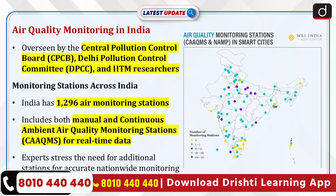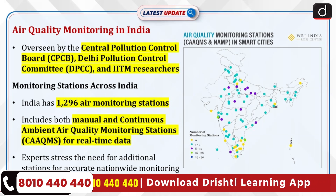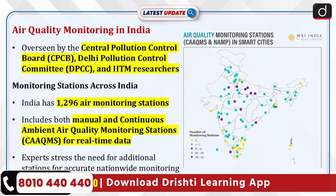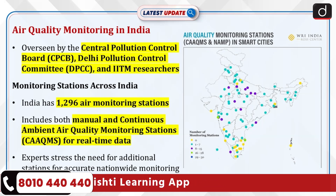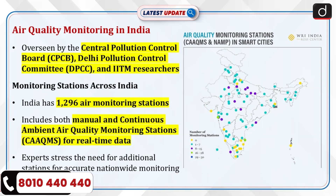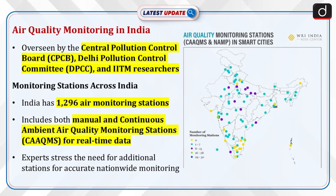Now let's discuss air quality monitoring in India. India's Central Pollution Control Board, along with the Delhi Pollution Control Committee and IITM researchers, oversees air monitoring. There are 1,296 air monitoring stations across India, with both manual and continuous ambient air quality monitoring stations providing real-time data. Despite the extensive network, experts emphasize the need for more stations for accurate monitoring nationwide.